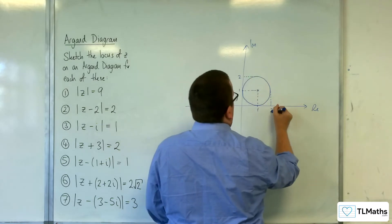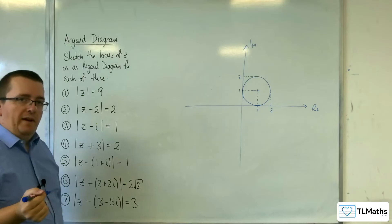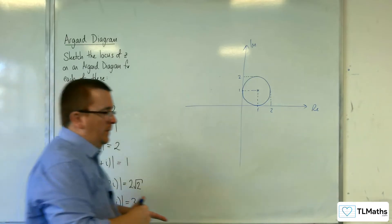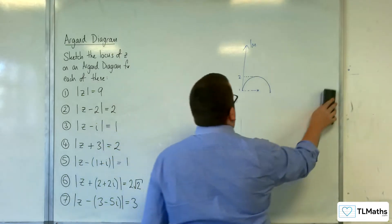My circle's not perfect. So that means that must be 2, and that must be 2. So it's a circle that is tangent to both the real and imaginary axis there, or has the imaginary and real axis as tangents, I should say.